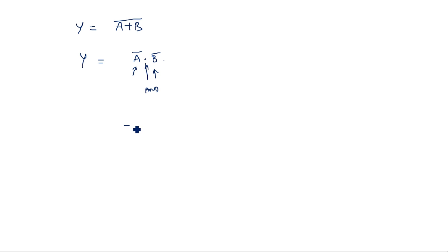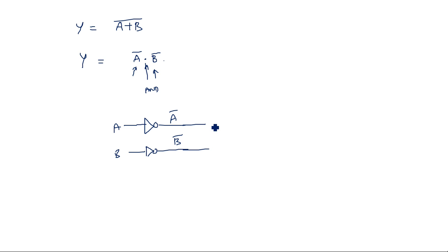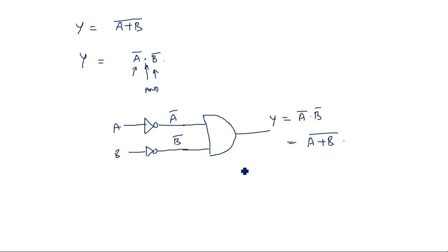So we will be having an inverter for input A and one more inverter for input B, giving us A bar and B bar. Now A bar and B bar are available, and in the center we have an AND operation. The AND gate output Y is equal to A bar dot B bar, which can also be written as A plus B whole bar. The name of this particular gate is the bubbled AND gate.